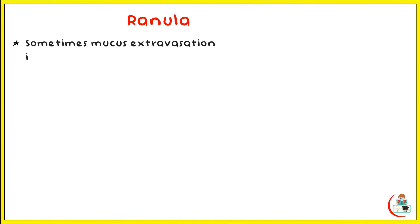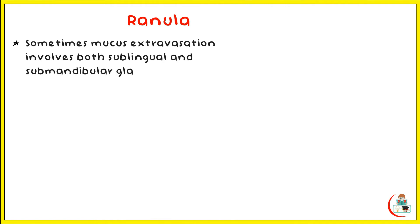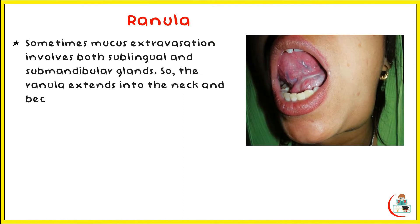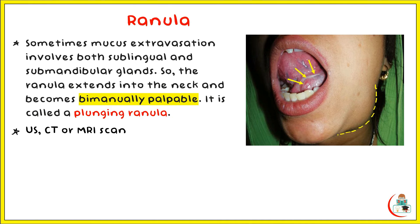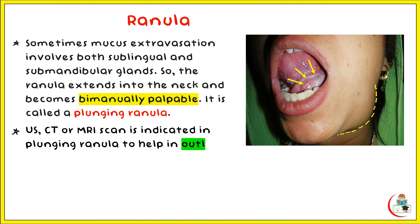Sometimes mucus extravasation involves both sublingual and submandibular glands. So the ranula extends into the neck and becomes bimanually ballottable. It is then called a plunging ranula. Ultrasonography, CT, or MRI is indicated in plunging ranula to help in outlining the extent of the lesion.